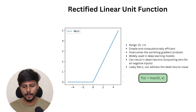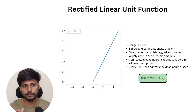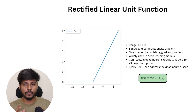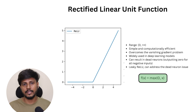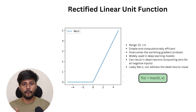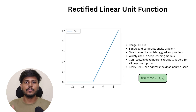However, there is another problem with ReLU: because we are completely ignoring the negative part, we get what's called dead neurons. To cope with this problem, there is another variant called the Leaky ReLU activation function.